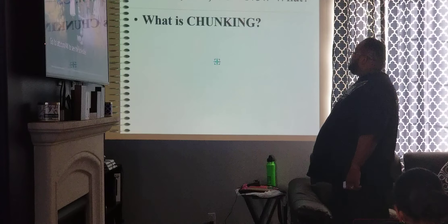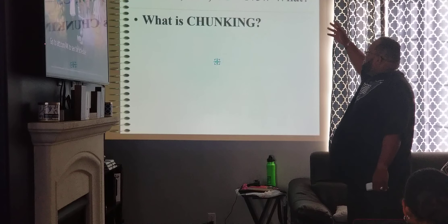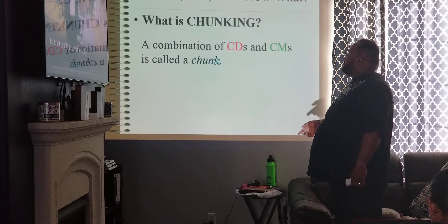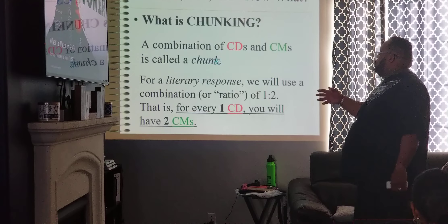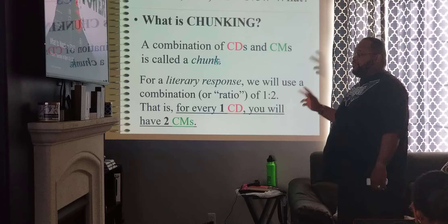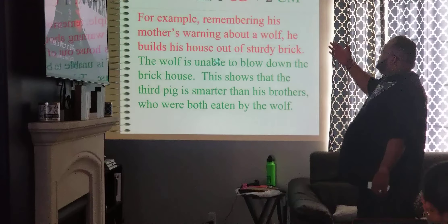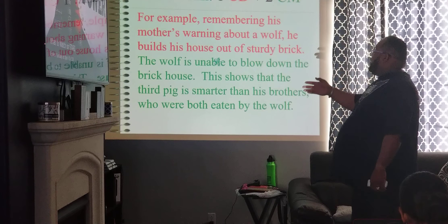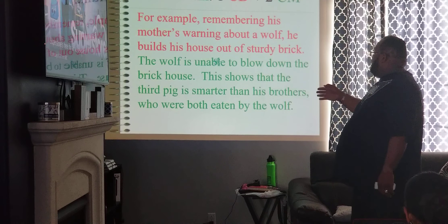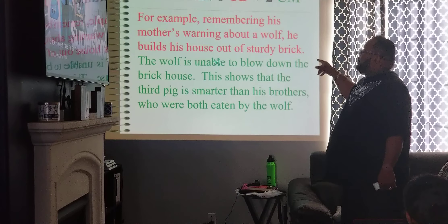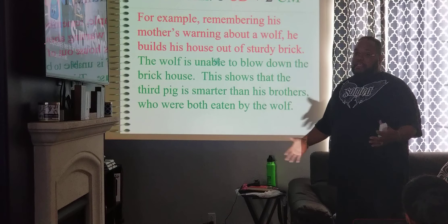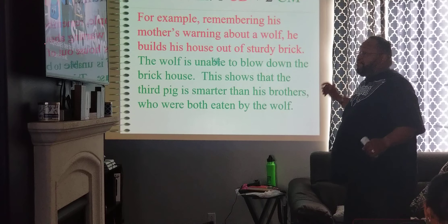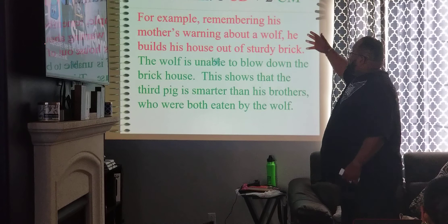Topic sentence, concrete detail, commentary, concluding sentence. Now, what is chunking? A combination of the CDs and the CMs is called a chunk. For a literary response, we use a ratio of one to two — for every one concrete detail, you will have two commentaries. One chunk equals one CD plus two CM. Example: concrete detail — 'Remembering his mother's warning about the wolf, he builds his house out of sturdy brick.' Commentary — 'The wolf is unable to blow down the brick house. This shows that the third pig is smarter than his brothers, who were both eaten by the wolf.' This is chunking — we take a concrete detail, add commentary, and it makes our burger that much better. The ratio is one to two.